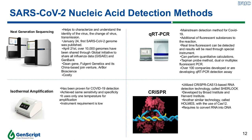The qRT-PCR has been shown as the mainstream detection method for COVID-19. The mechanism is simple: with the addition of fluorescent substances to the reactions and through the use of a special PCR instrument, real-time fluorescence can be detected and results obtained. This technology can perform quantitative calculations on the PCR template. There are several improved versions including the TaqMan probe method and dual or multiplex fluorescent PCR. Currently, over 100 companies have developed or are developing qRT-PCR detection assays to improve sensitivity and specificity.